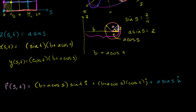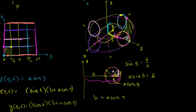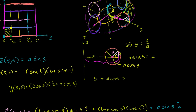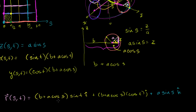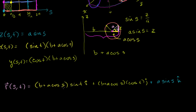So you give me any s and t within this domain, put it into this position vector-valued function, and it gives you the exact position vector specifying the appropriate point on the torus. Let's verify: pick the point where s = π/2 and t = π/2. Substituting: b + a·cos(π/2). Cosine of π/2 is 0, so this becomes b.